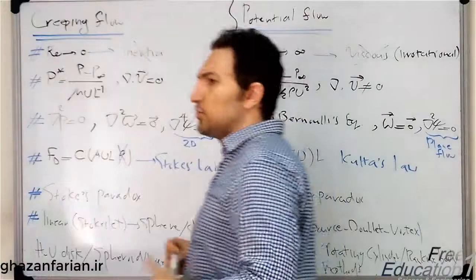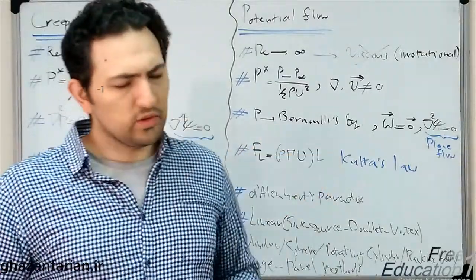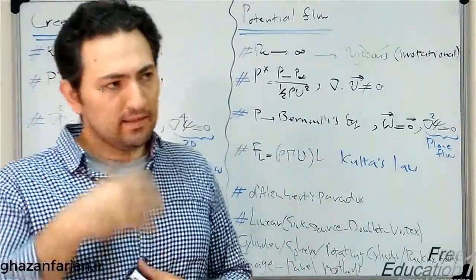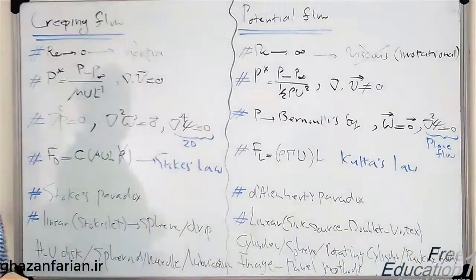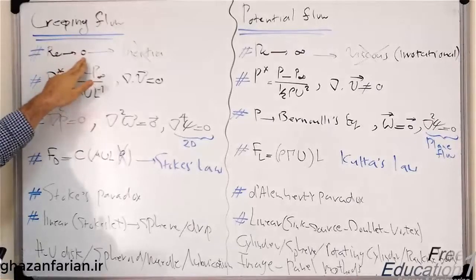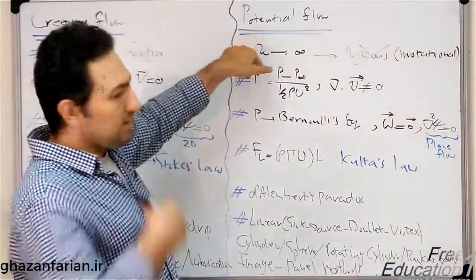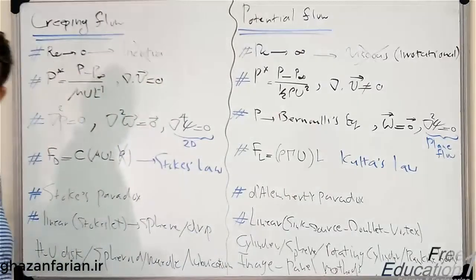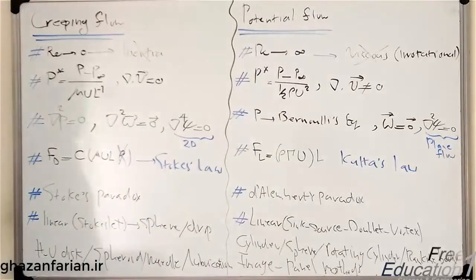In one of my previous lectures, I introduced the Reynolds axis — an axis along which the Reynolds number varies. It has two ends: the left end is devoted to the creeping flow, where the Reynolds number is very small, near zero, and the right-hand side is devoted to the potential flow, where the Reynolds number goes to infinity.